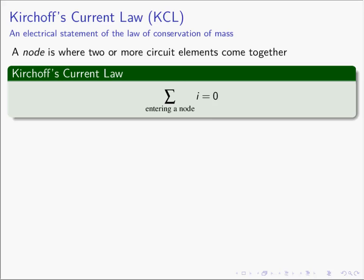Before we start describing what Kirchhoff's Current Law is, we need another definition. A node is where two or more circuit elements come together. We are going to define a large number of circuit elements in the coming lectures, and where two or more of them are joined together is a node.